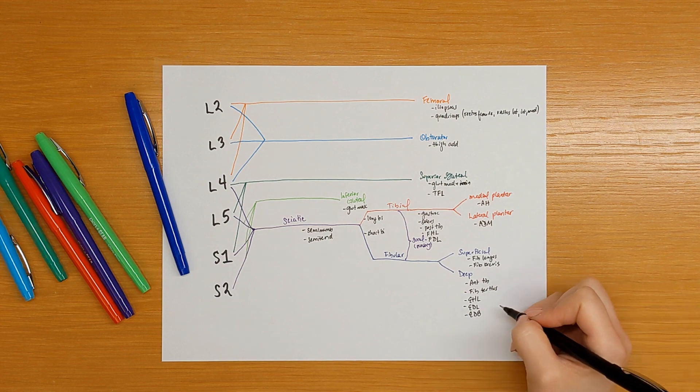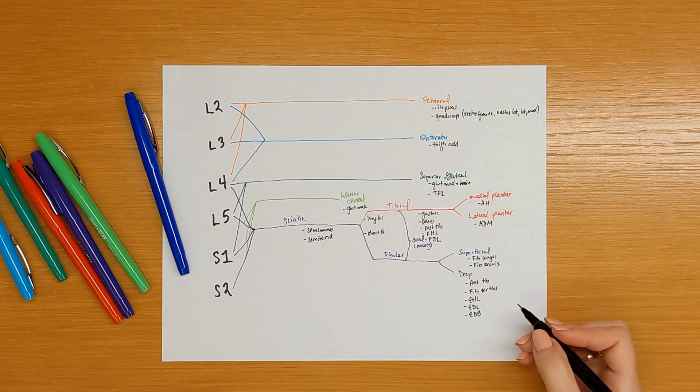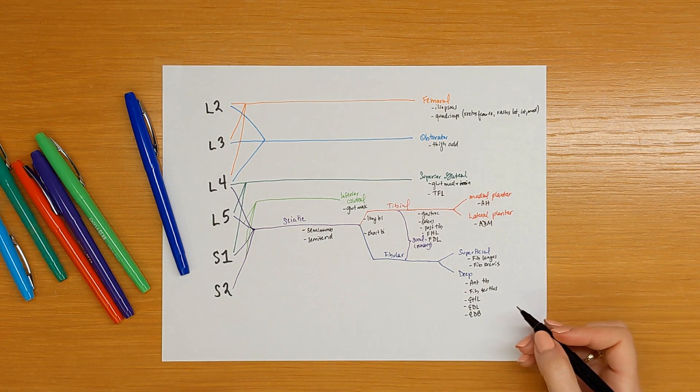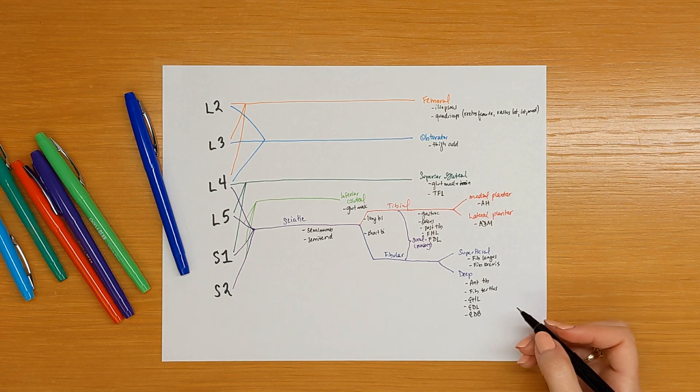And there you go — that's the diagram of the intermediate level peripheral neuroanatomy in the leg.